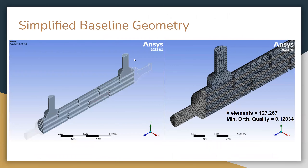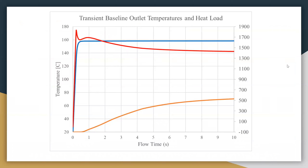Now we're going through the transient results. This is the transient simplified baseline geometry — you can see the basic geometry and the number of mesh elements on the right. The orange outline is the cold outlet temperature, the red outline is the heat load between the warm and cold pipes, and the blue line is the warm outlet temperature. The warm outlet temperature rises very quickly and reaches steady state, while the cold outlet temperature takes quite a while to rise, coinciding with the heat load reaching steady state, at which point the cold outlet temperature begins to rise and then reaches its own steady state.